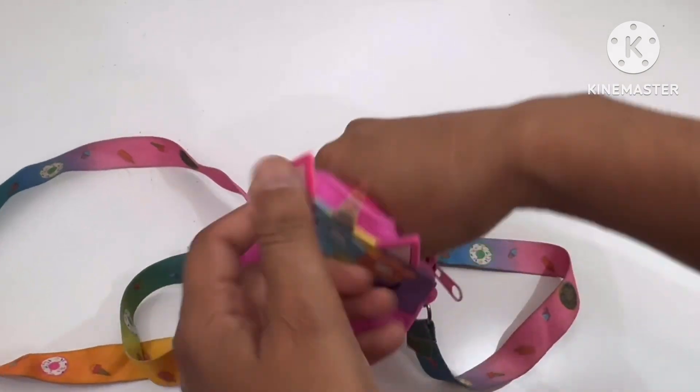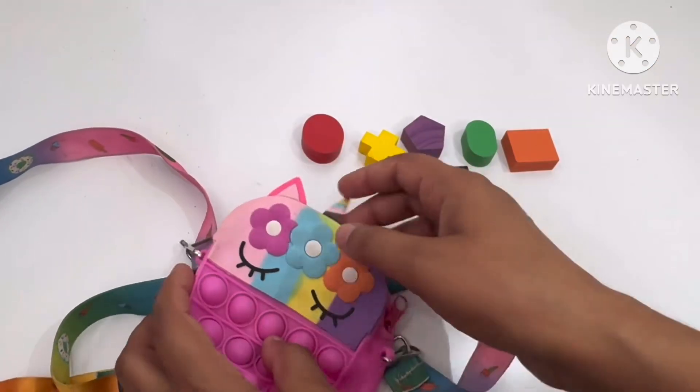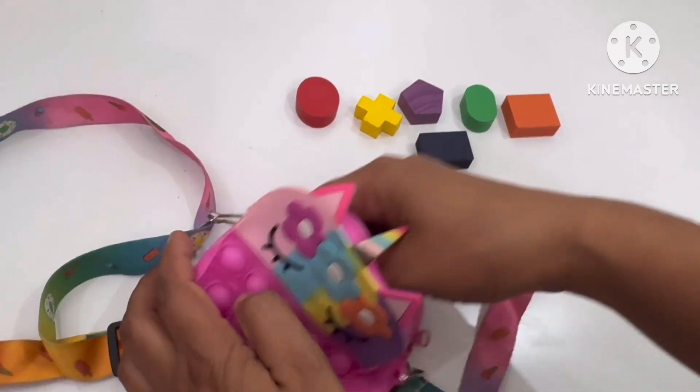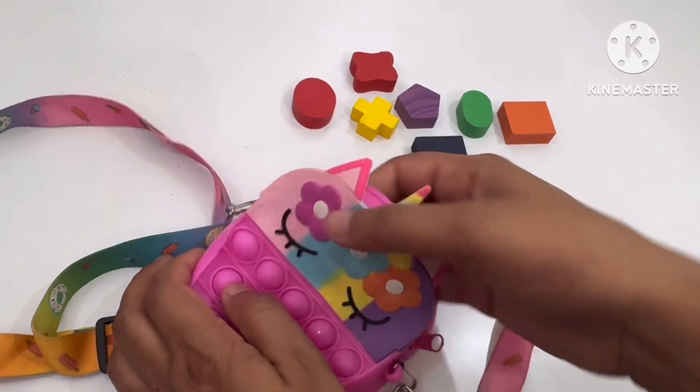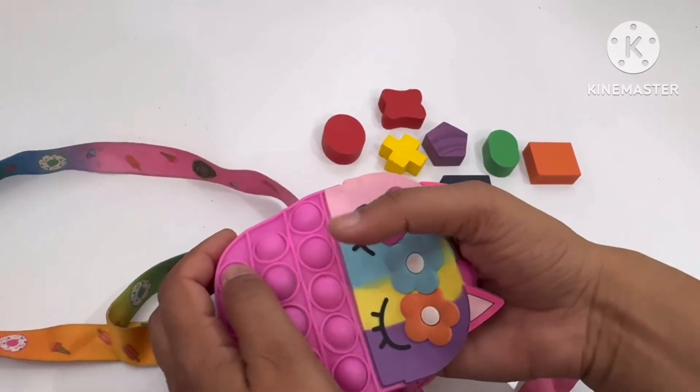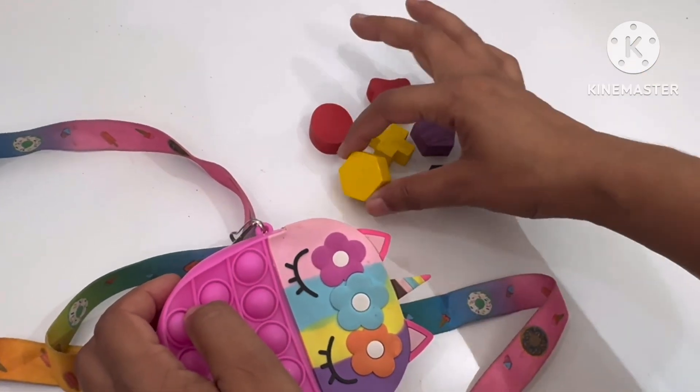What else we have? Let me check. Oh! Circle! And we have odd shape. Do we have more? Yes! We have one or two more. Oh! Hexagon!